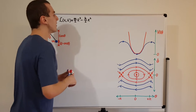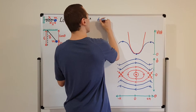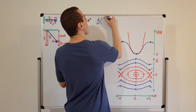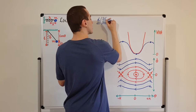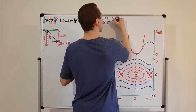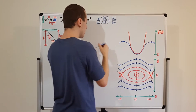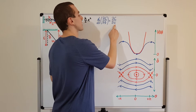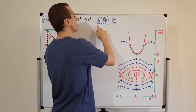Now we can write down the Euler-Lagrange equation. It involves the time derivative of the partial derivative of the Lagrangian with respect to x-dot, set equal to the partial derivative of the Lagrangian with respect to x. The derivative with respect to x-dot is a partial derivative, as is the derivative with respect to x, while the time derivative is a total derivative.